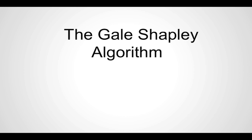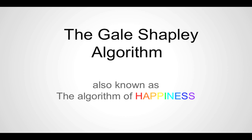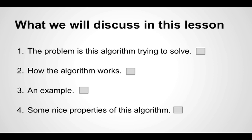Hi, welcome to a 10-minute lesson on the Gale-Shapley algorithm, or the algorithm of happiness. The lesson will roughly follow this format. Let's start with the problem that this algorithm is trying to solve, which is the stable matching problem, or sometimes called the stable marriage problem.